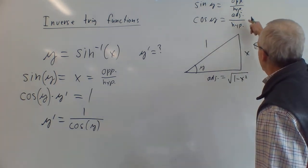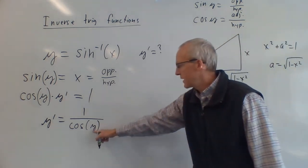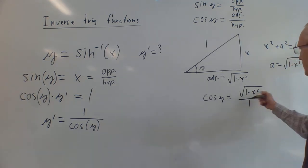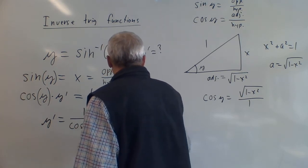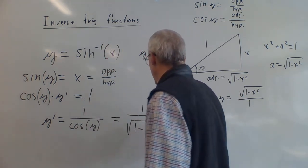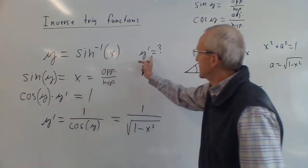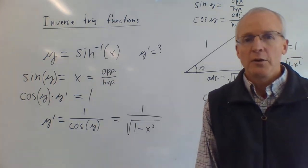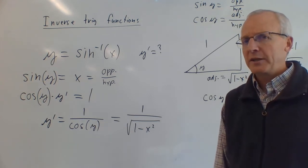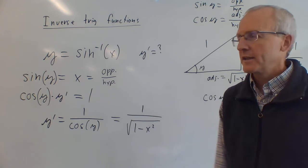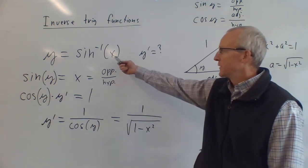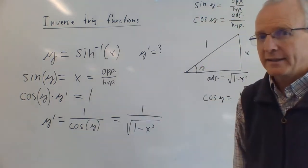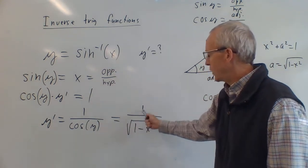Cosine of y is adjacent over hypotenuse, which is the square root of 1 minus x squared over 1 — so just the square root of 1 minus x squared. Therefore, y prime equals 1 over the square root of 1 minus x squared. That is the derivative of inverse sine. It's a great application of implicit differentiation — we found the derivative of an inverse function by differentiating the original one implicitly.